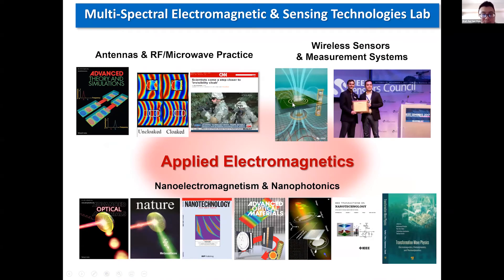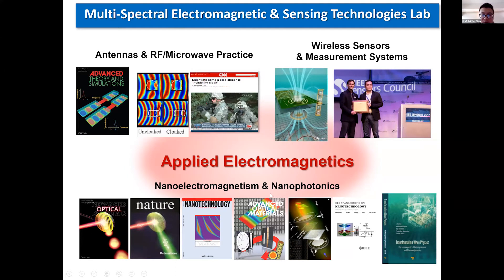This is some information about our lab. We are the Electromagnetic and Sensing Technologies Lab. We work on antennas, RF, and microwave practice, like antenna design, microwave filters, and also uncloaking and cloaking devices. We also work on wireless sensors, like a measurement system about the PT-symmetry wireless sensor, and try to improve the sensitivity of the wireless sensors. We also work on applied electromagnetics — metamaterials, nanophotonics, and nanoelectromagnetics.